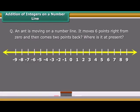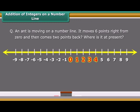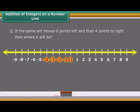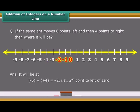An ant is moving on a number line. It moves six points right from zero and then comes two points back. Where is it at present? It will be at six plus minus two is equal to fourth point to the right of zero. If the same ant moves six points left and then four points to the right, then where will it be? It will be at minus six plus within bracket plus four equals minus two. That is, second point to left of zero.